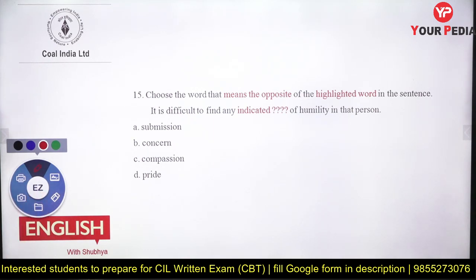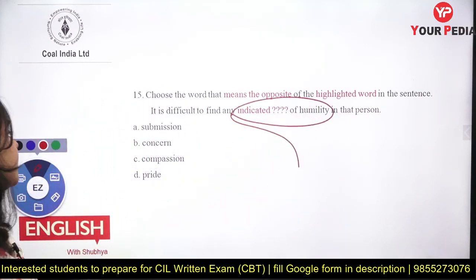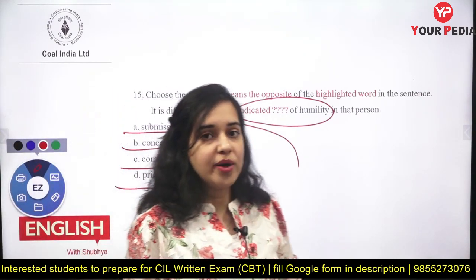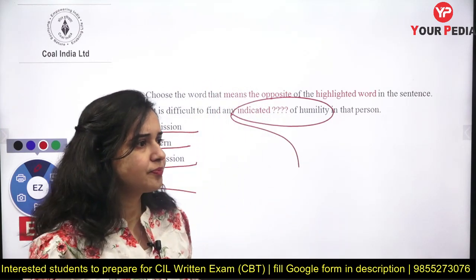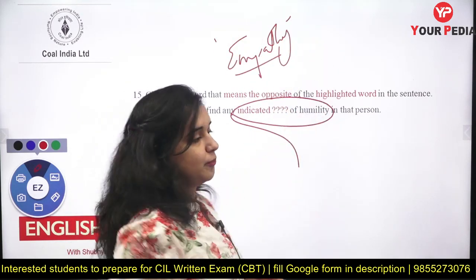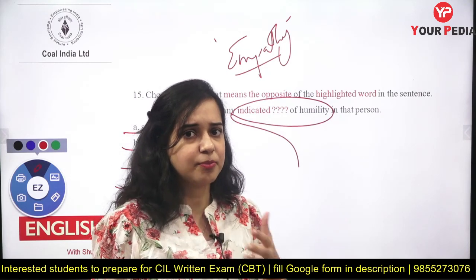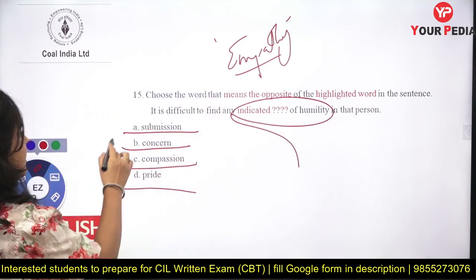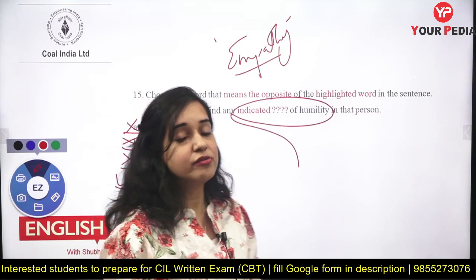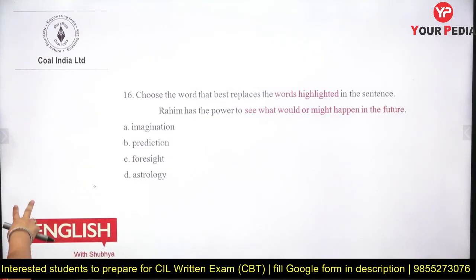Question fifteen asks for the antonym of the highlighted word. The sentence is: 'It is difficult to find any indicator of humility in that person.' Humility relates to sympathy, empathy, and being submissive. Options: submission, concern, compassion, pride. Pride is the only negative word — it is the opposite of humility. The answer is pride.